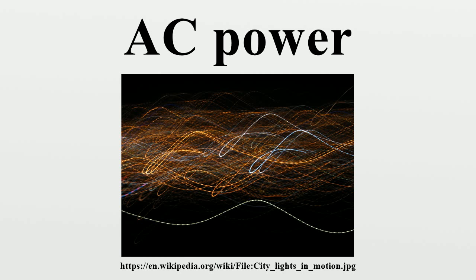In the diagram, P is the active power, Q is the reactive power, S is the complex power, and the length of S is the apparent power. Reactive power does not do any work, so it is represented as the imaginary axis of the vector diagram. Active power does do work, so it is the real axis. The unit for all forms of power is the watt, but this unit is generally reserved for active power. Apparent power is conventionally expressed in volt-amperes, and the unit for reactive power is expressed as VAR, which stands for volt-ampere reactive.